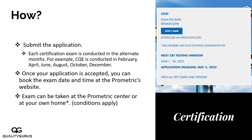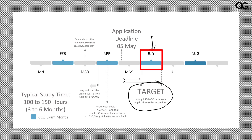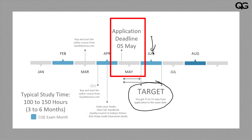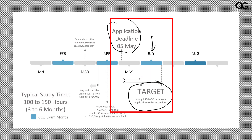Now comes the question of when you should apply for this exam. I have a timeline here that will help you decide when to book the exam. Let's say your target is June. To appear in the June exam, you need to apply one month in advance — the application deadline is May 5th. Between when you apply and when you take the exam, you have 25 to 55 days. So if you apply on May 5th, you have 25 days up to June 1st, and up to around 55 days by the end of June.